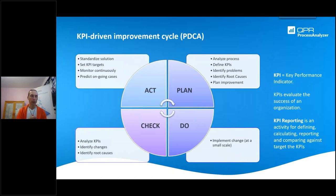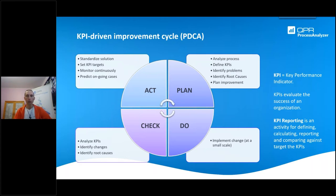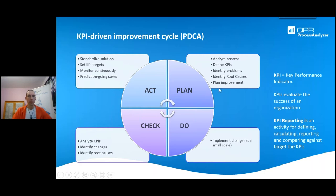A KPI very often has a target value that your company wants to reach. How do we do KPI-driven improvement? As we discussed last week about the PDCA Deming cycle: in the planning stage you analyze your processes, define the KPIs, see where there are problems, find the root causes, and then plan for the improvement. This is an activity where process mining is really heavily used.